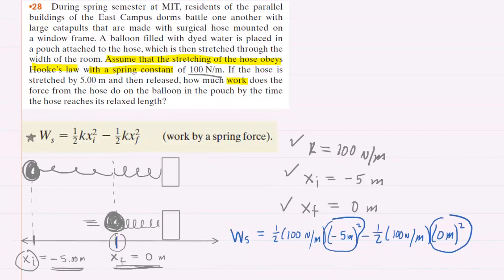We can punch this into our calculator and when we do so we should get a work done by this spring or this stretched hose of 1250 joules. So this would be the correct answer to the question.